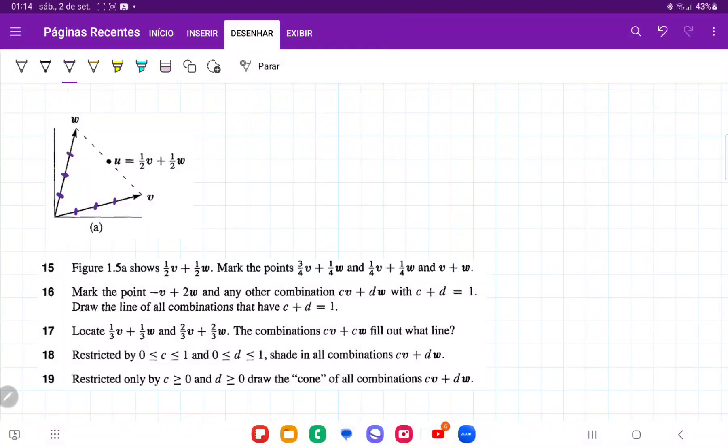So for number 15, we have figure 1.5a, which shows where half v plus half w is, this point u. And then it wants us to mark the points 3 quarter v plus 1 quarter w.